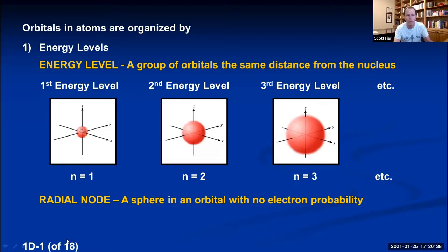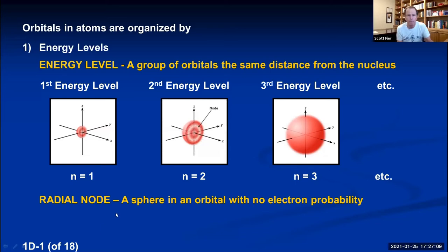If we cut open the first orbital, orange color shows high probability of finding the electron, fading to white where there's no probability. Right at the nucleus the color is white — you can't find the electron there — but as you move away, probability increases, then goes back to white at the edge. In the n = 2 orbital, there's a region of high probability, then a white radial node where you can't find the electron, then high probability again.